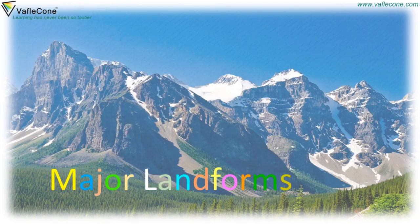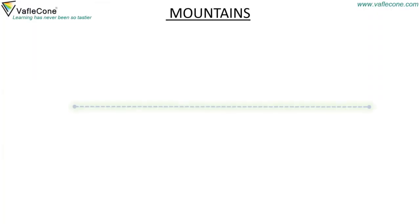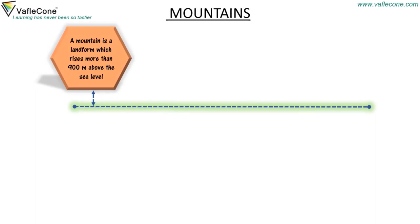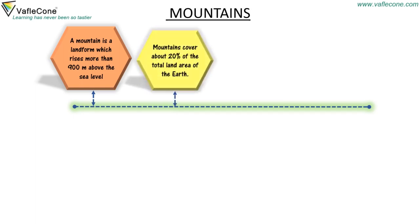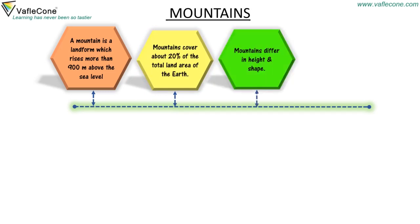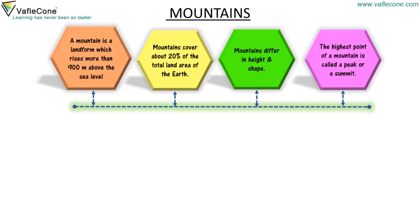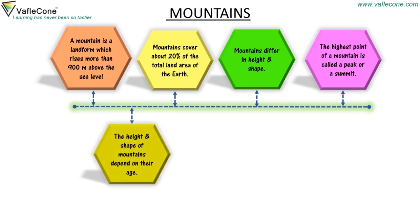Major landforms: Mountains. A mountain is a landform which rises more than 900 meters above sea level. Mountains cover about 20 percent of the total land area of the earth. Mountains differ in height and shape. The highest point of a mountain is called a peak or a summit. The height and shape of mountains depend on their age.